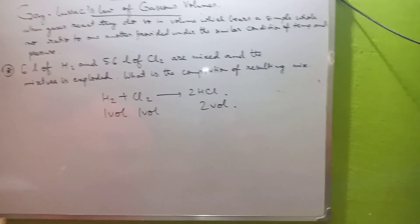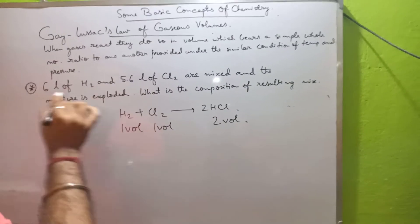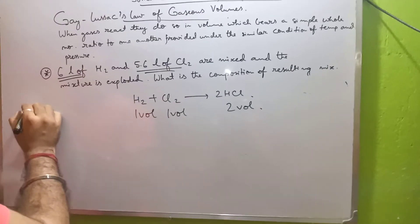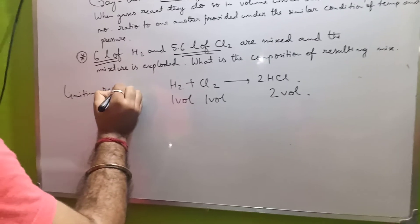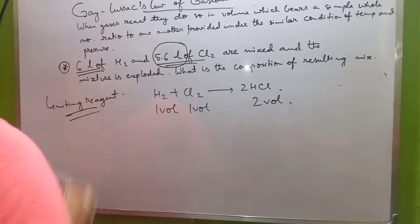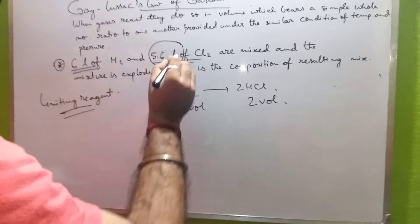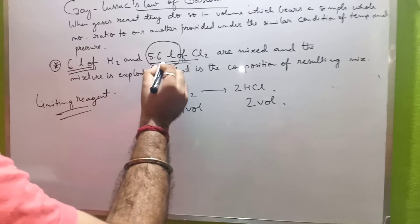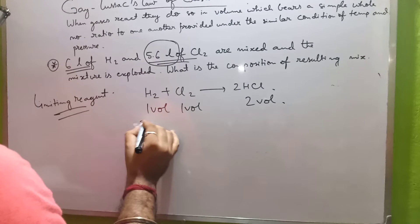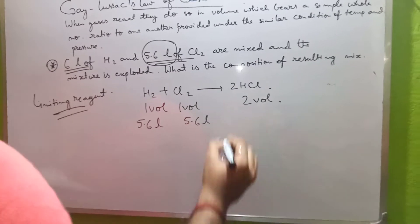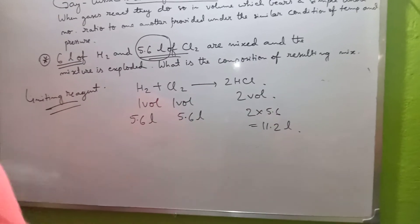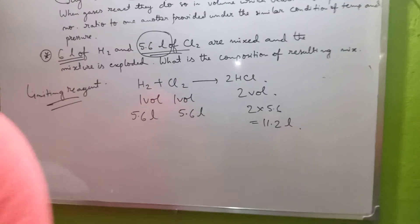Both should be in equal concentration, but in the problem we have 6 liters of hydrogen and 5.6 liters of chlorine. So we come across the term limiting reagent — the reactant whose concentration is less compared to the other. Here chlorine (5.6 L) is the limiting reagent. So we take 5.6 liters for both reactants, and the HCl produced is 2 × 5.6 = 11.2 liters.